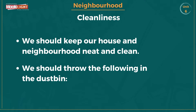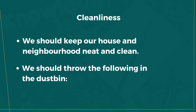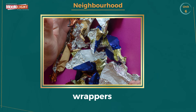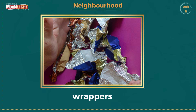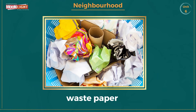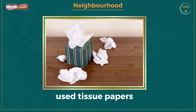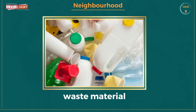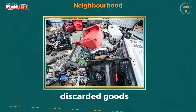Cleanliness — we should keep our house and neighborhood neat and clean. We should throw the following in the dustbin: number one, peels of fruit; number two, wrappers; number three, waste paper; number four, used tissue papers; number five, waste material; and the last one is discarded goods.